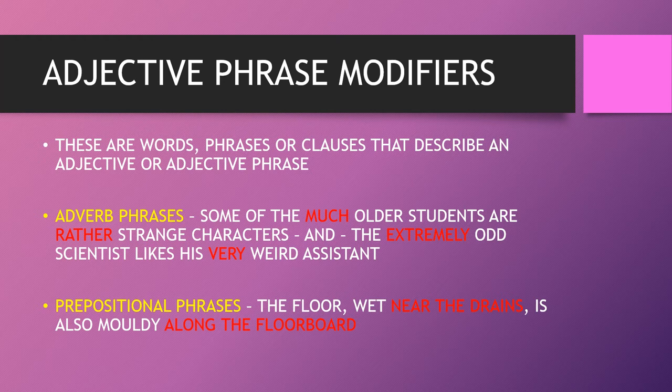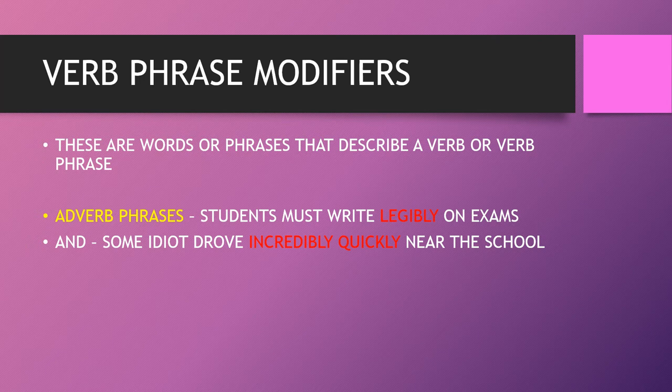Verb phrase modifiers are words or phrases that describe a verb or verb phrase. For example: 'students must write legibly on exams' and 'some idiot drove incredibly quickly near the school.' Even if you don't know the expression 'verb phrase modifier,' you've already been using them.